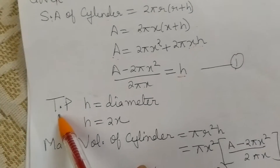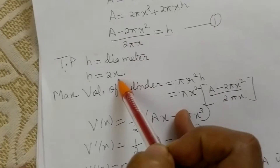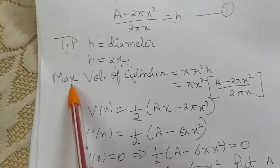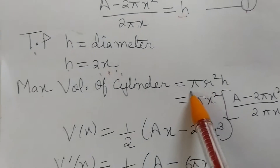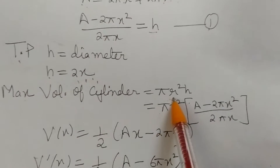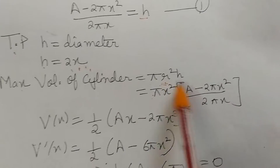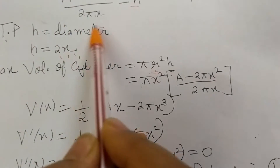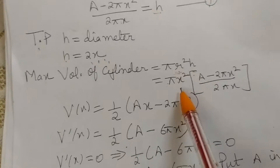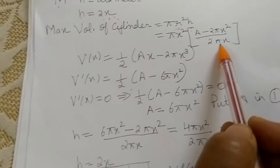What we have to prove is that height equals twice the radius, that is, the diameter. The volume of the cylinder is πr²h, so V = πx²h. In place of h, we put the value from equation 1, giving V = πx² · (A − 2πx²) / (2πx).